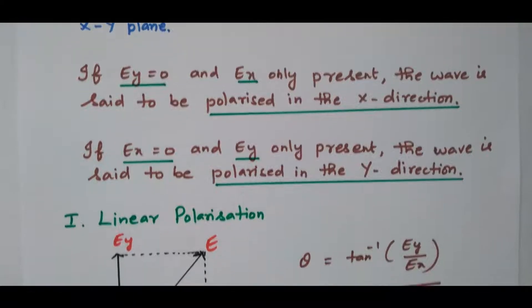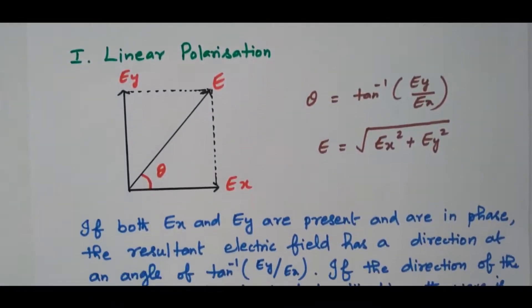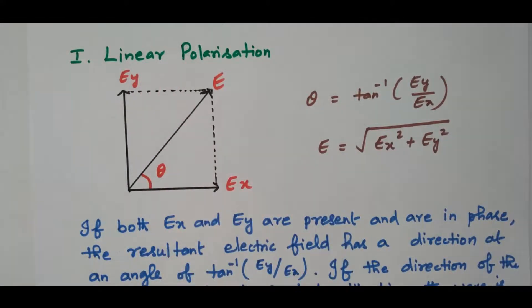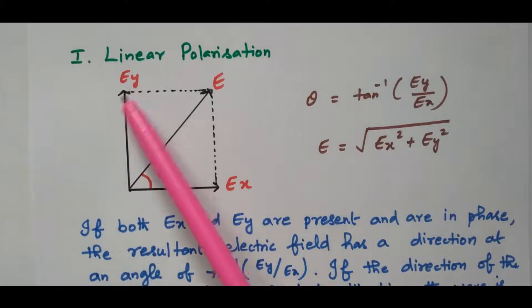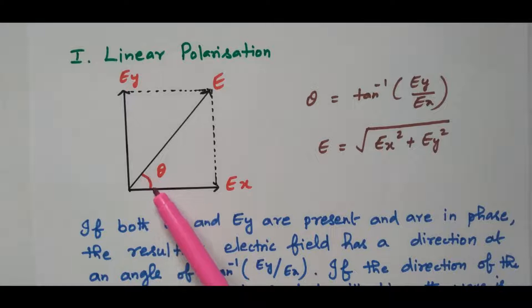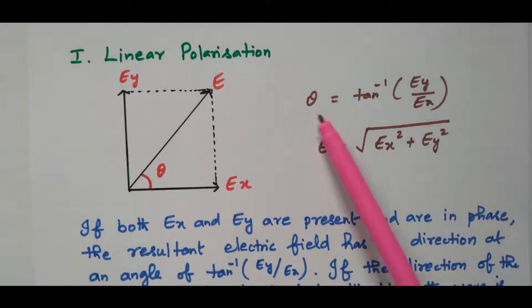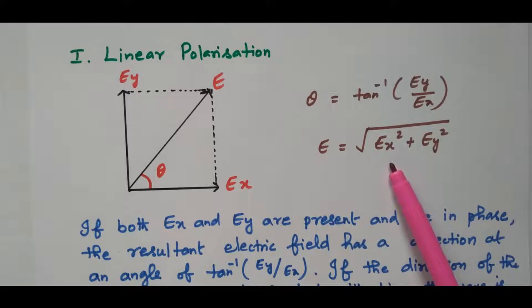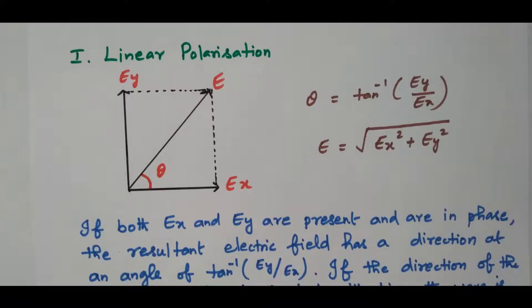Suppose if both Ex and Ey are available, then it is called linear polarization. Ex is available in the x-axis, Ey is available in the y-axis, and the total E is the sum of these two. From the diagram, the angle theta can be written as tan inverse of Ey by Ex. The magnitude of E is the square root of Ex squared plus Ey squared — this vector sum.